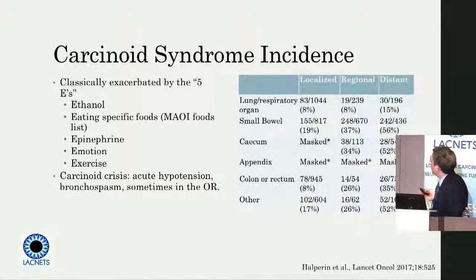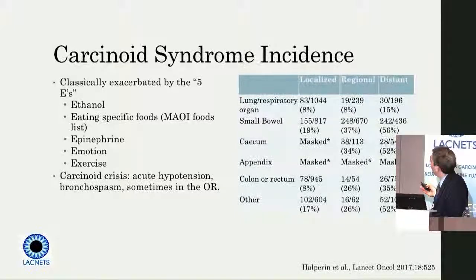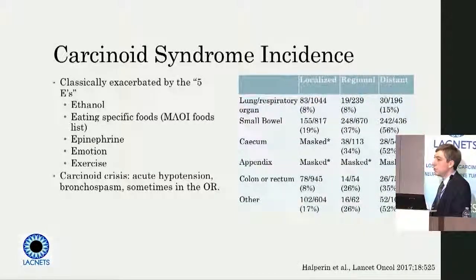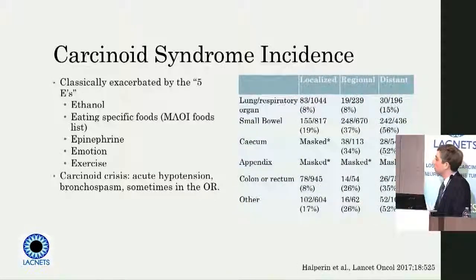It is classic to see carcinoid syndrome in a patient with a distant mid-gut neuroendocrine tumor — that's where we see it most frequently. Other sites that are probably mid-gut, like the cecum, which is the right colon, and other, which usually just means small bowel, all have the highest incidence. But it's not true that just because you don't have a metastatic mid-gut, well-differentiated neuroendocrine tumor, you could not possibly have carcinoid syndrome. It's just that it's more likely under those conditions.